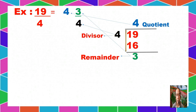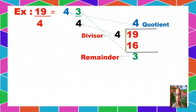Let's have another example, also taken from your module, particularly in your assessment. We have 19 over 4. This fraction is an improper fraction because the numerator is bigger. So we will change this into a mixed number and divide 19 divided by 4.